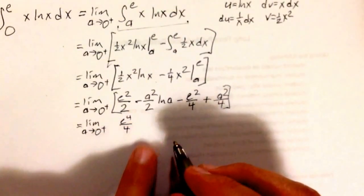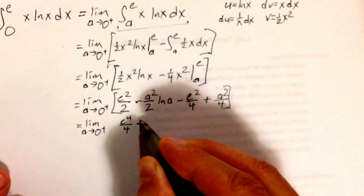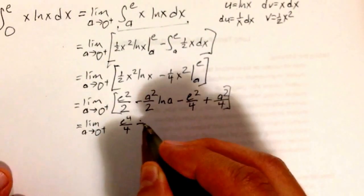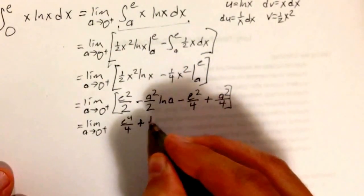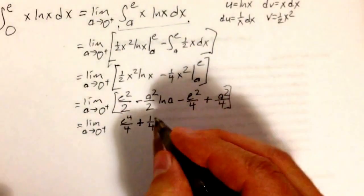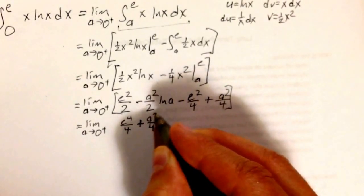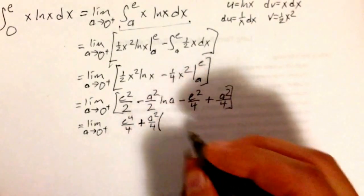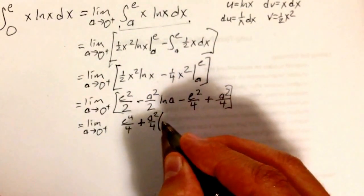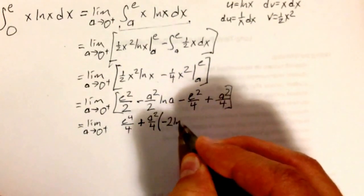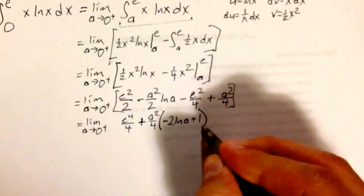let me do positive 1 fourth. So a squared times, let's see, what do I have here? I have negative 2 natural log of a plus 1.